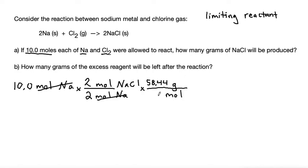That number always goes with grams and that's the number of grams per one mole. So that cancels out the unit of moles. And now we can calculate 10 times 2 divided by 2 times 58.44. I get that to be 584.4 grams of NaCl.